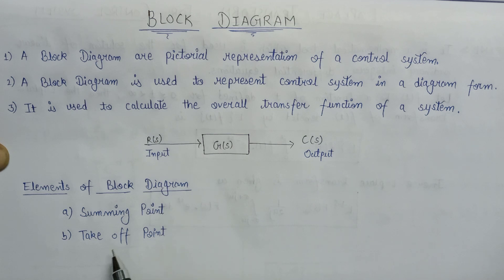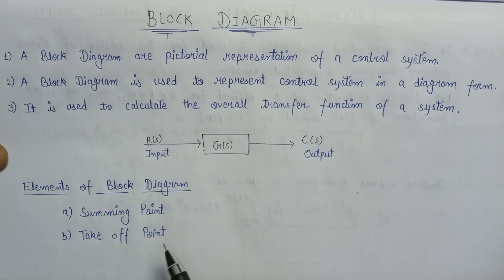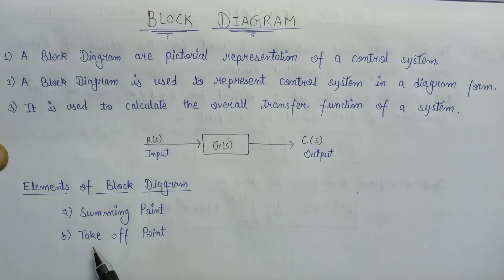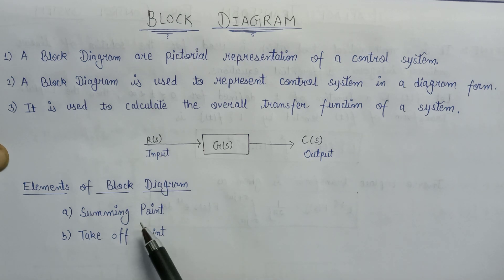A summing point is used to sum two or more input signals. A takeoff point is a point from where the signal goes out or takes off, as its name represents. Let us discuss both these elements of a block diagram in more detail.